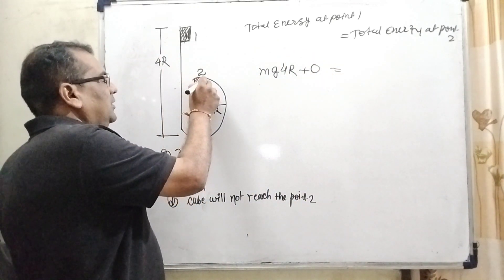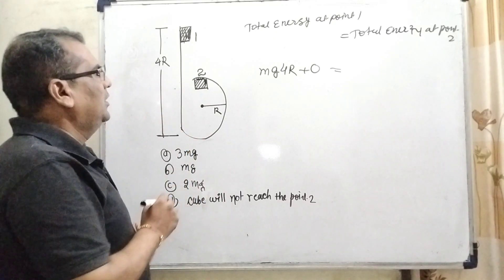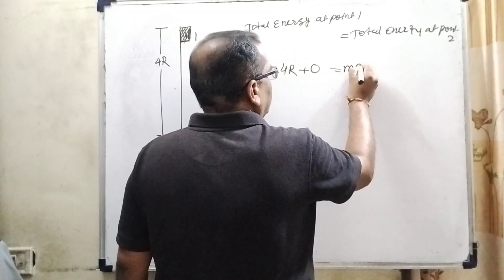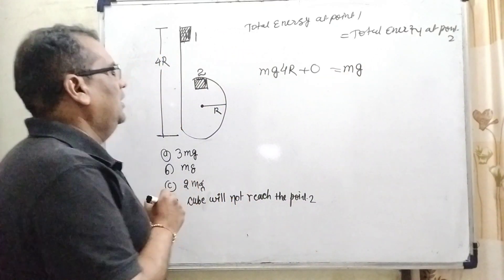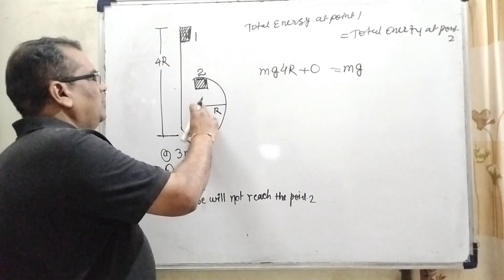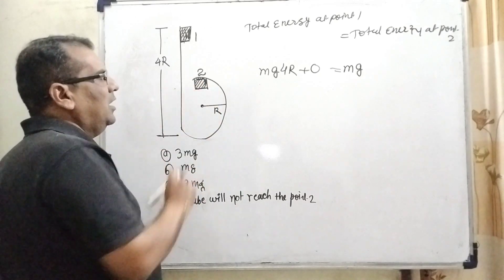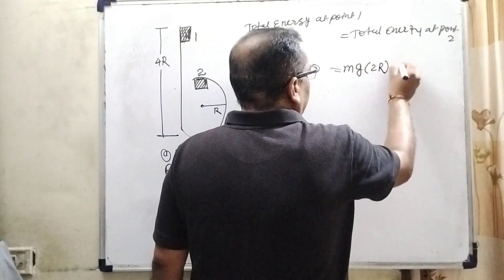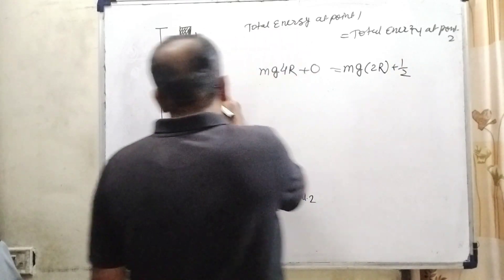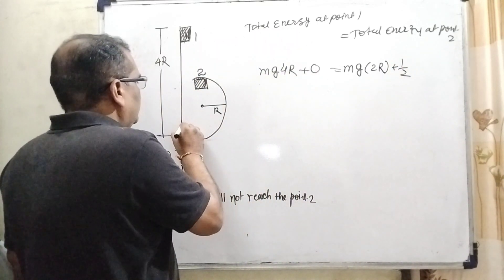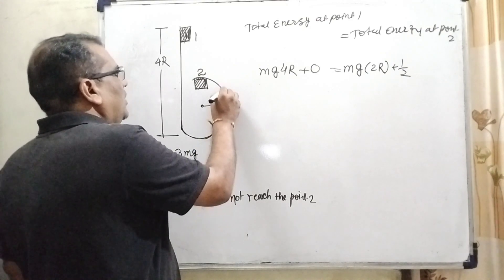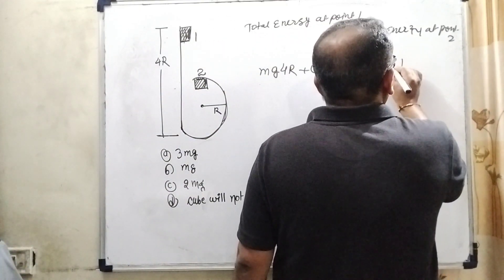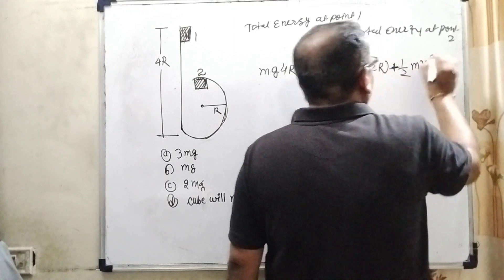At the point 2 here, this point potential energy mg. And what is the height from the ground? That is R. And this is R. That is 2R. And kinetic energy because this block moving and making the circular path. So, therefore that is certain kinetic energy is also possible. So, mv square. Is that clear?